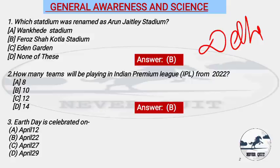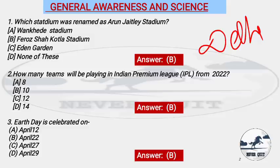Question 3: Earth Day is celebrated on which date? Options: A) April 12, B) April 22, C) April 27, D) April 29. The right answer is option B — Earth Day is celebrated on April 22.